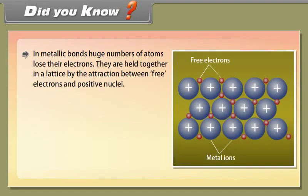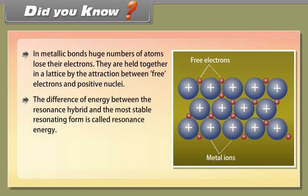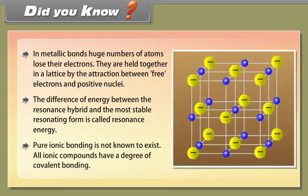Did you know? In metallic bonds, a huge number of atoms lose their electrons and are held together in a lattice by attraction between free electrons and positive nuclei. The difference in energy between the resonance hybrid and the most stable resonating form is called resonance energy. Pure ionic bonding is not known to exist — all ionic compounds have a degree of covalent bonding.